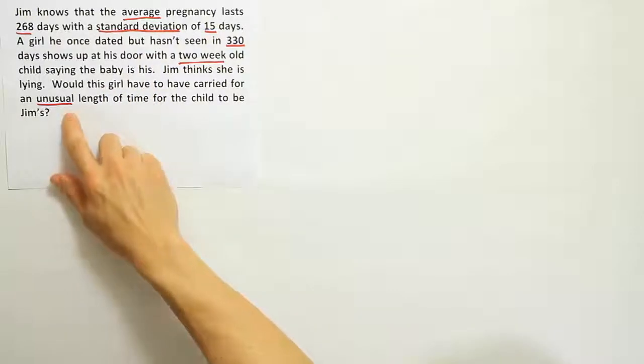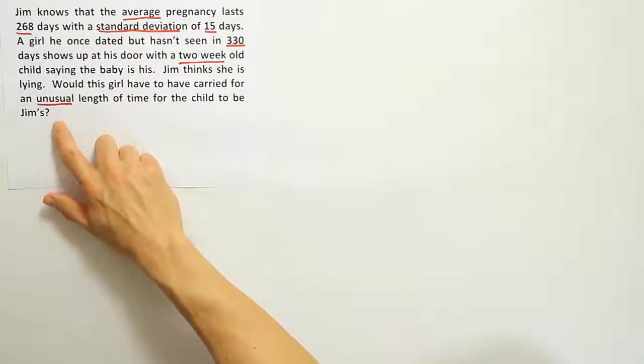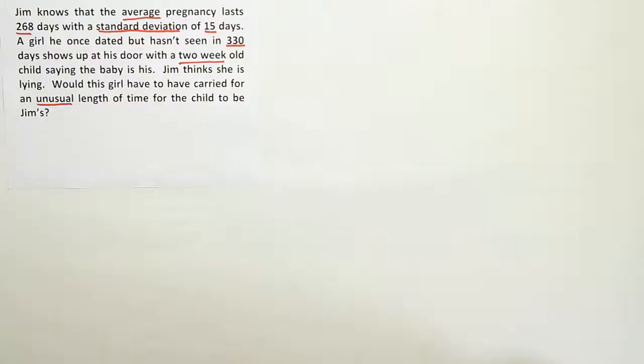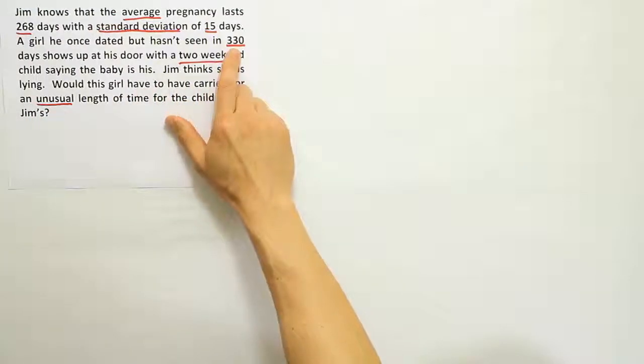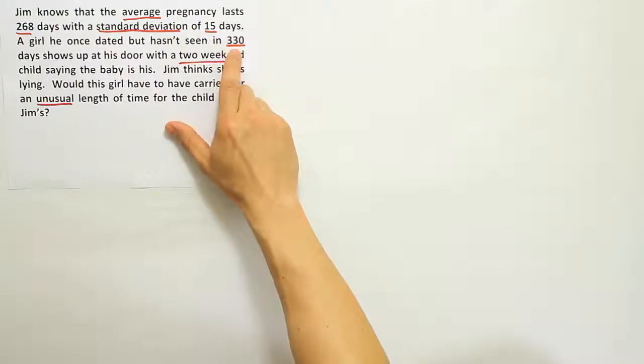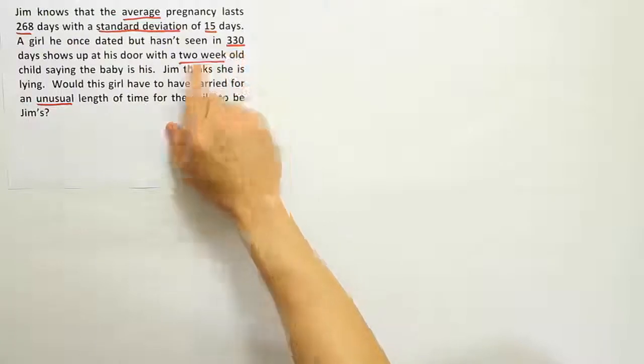And this is all under the scenario that it's true that it's Jim's child. So if Jim was in fact the father, he couldn't have possibly got this girl pregnant unless it was during the time that he had seen her last. So if you take the scenario where it's the last day he saw her, that was 330 days ago.